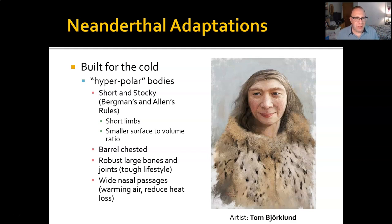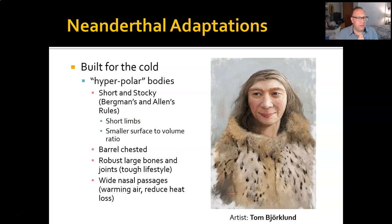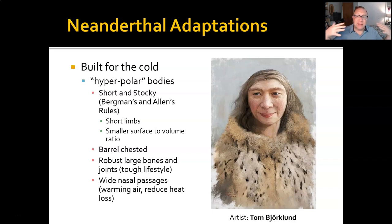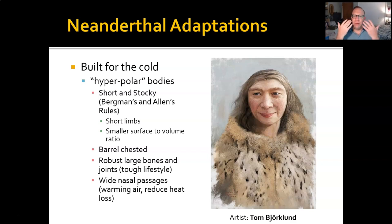First thing about Neanderthals is that they were built for the cold. They evolved in environments living near continental-sized glaciers. They have what are called hyperpolar bodies, following Bergmann's and Allen's rules — so they're short and stocky, with short limbs and a small surface-to-volume ratio. The barrel-chested nature adds to that ratio. Their bones are extremely robust; they could survive breaks that would leave you or me disabled for the rest of our lives. And finally, they have wide nasal passages as a way of warming the air before it reaches the core of their body, helping preserve core body temperature.